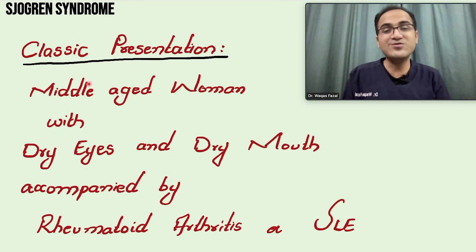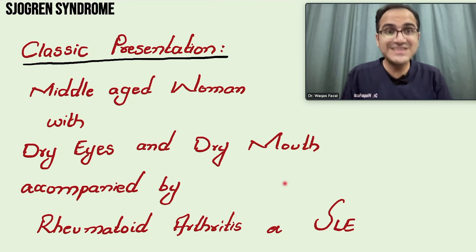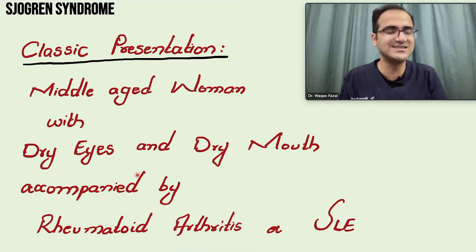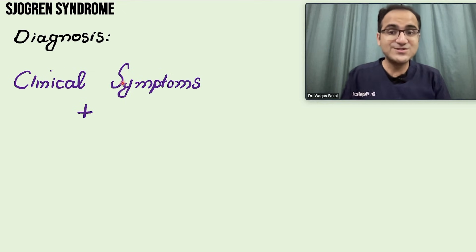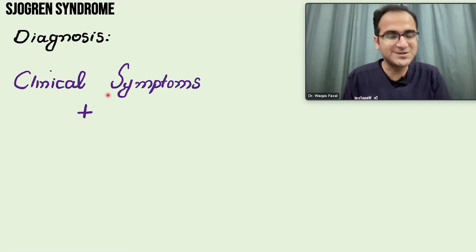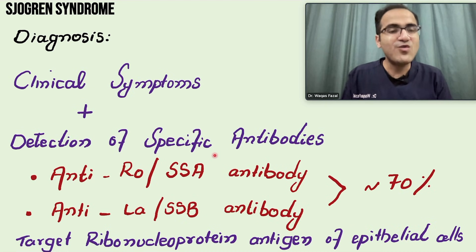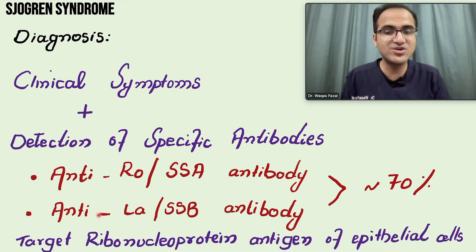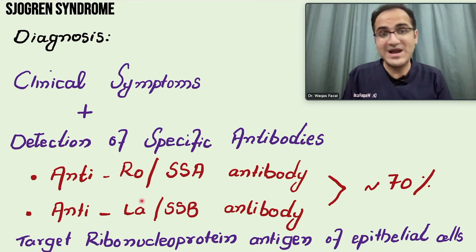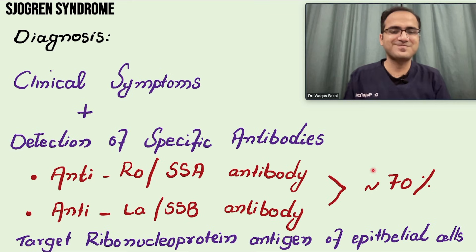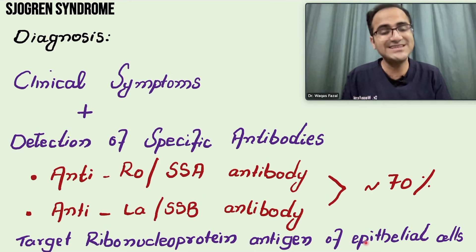A classical exam presentation would be a middle-aged woman with known rheumatoid arthritis or known SLE presenting with dry eyes and dry mouth — that is secondary Sjögren's syndrome, because we know the cause. Coming to diagnosis, the clinical symptoms are a giveaway. Specific antibodies for Sjögren's syndrome are anti-Ro and anti-La antibodies, also called anti-SSA and anti-SSB antibodies. In 70% of cases these turn out positive and with symptoms this confirms classical Sjögren's syndrome. These antibodies target the ribonucleoprotein antigen of epithelial cells.